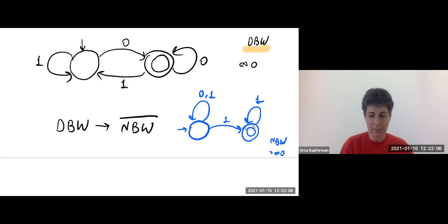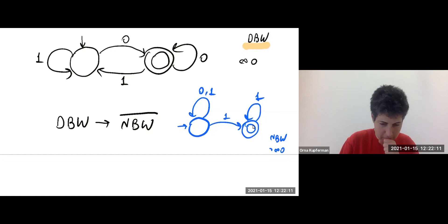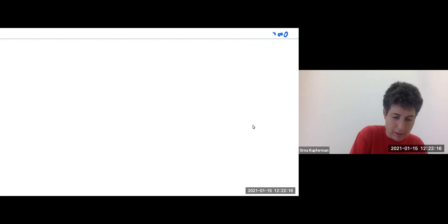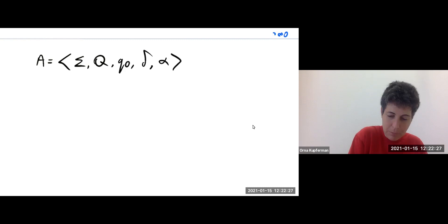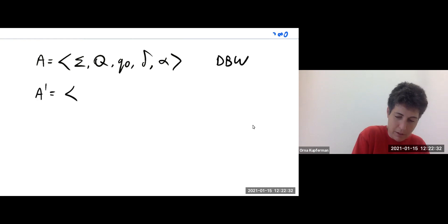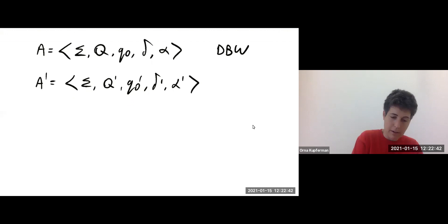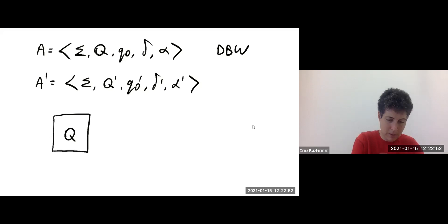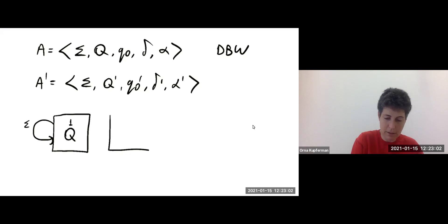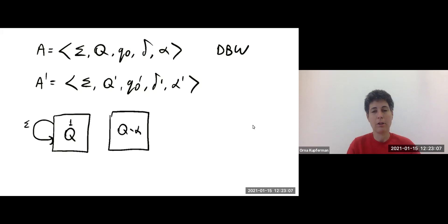In this example, a bad thing was to see zero. When we generalize it to a construction, we will do it for the whole automaton. Assume I am given a deterministic automaton — let's write all the details formally. So this is a DBW, and I want to define A prime that complements it. The alphabet is the same: Q prime, Q zero prime, delta prime, alpha prime. I will take a copy of all the states of A. Whenever I see a letter, I can either stay in this first copy. But if the letter sigma takes me to a state not in alpha, I can also go to the second copy, which contains only the states not in alpha.